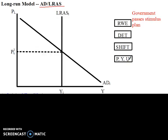Unemployment is not explicitly shown on the graph, but just remember that unemployment does the exact opposite of what gross domestic product does. If real GDP goes up, unemployment goes down; if real GDP goes down, unemployment goes up. Let's take a look at an example: the government passes a stimulus plan.